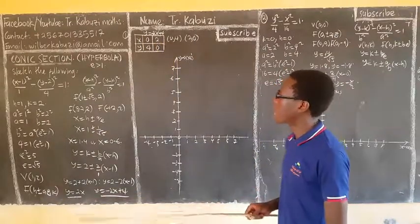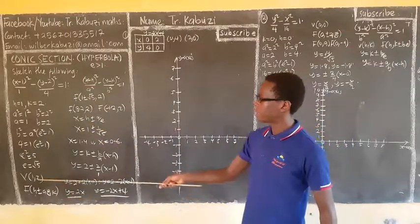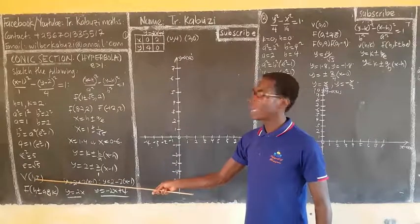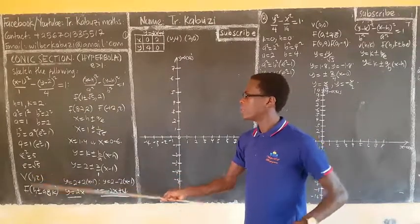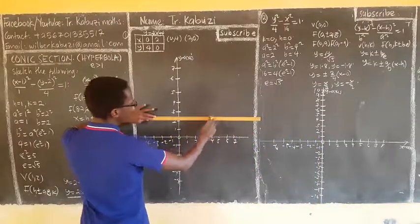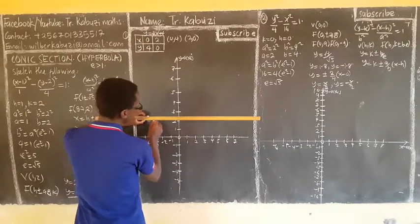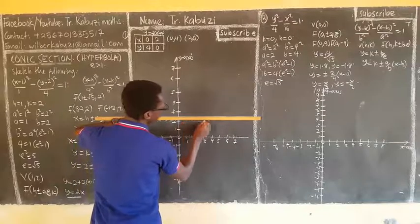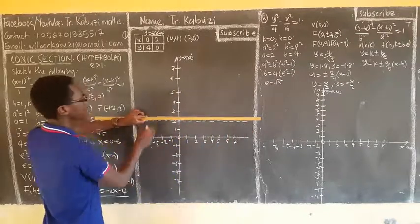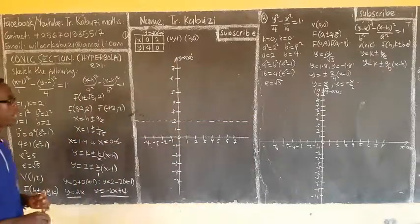For the other asymptote, I need to get its intercepts. When x is zero, I put zero and y is four. When y is zero, x will be two. Now the sketch: we sketch our vertex at one, two.